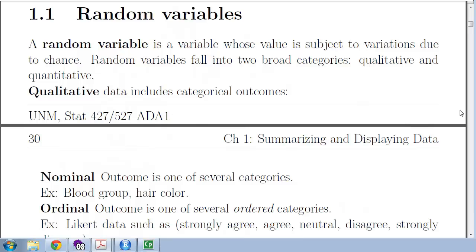First we define what random variables are. A variable that takes a number, and that number is subject to a random process — that is a random variable. For example, you could assign a variable Y to be the height of the next person who walks through a restaurant door. That height will take a number, but you don't know what it is until you observe it. That is the random process.